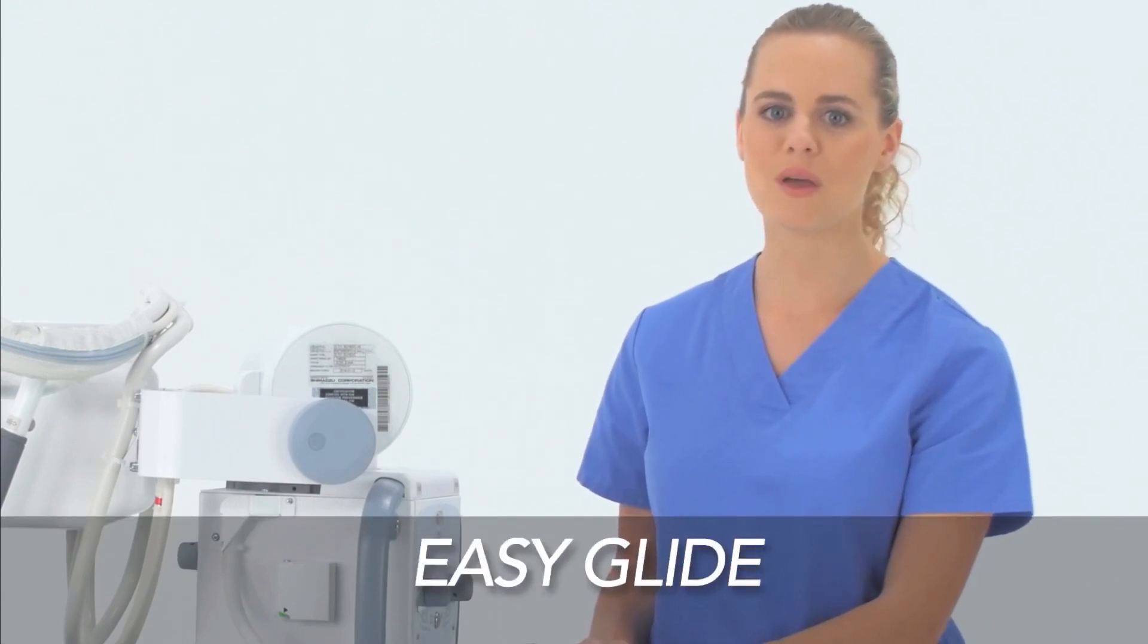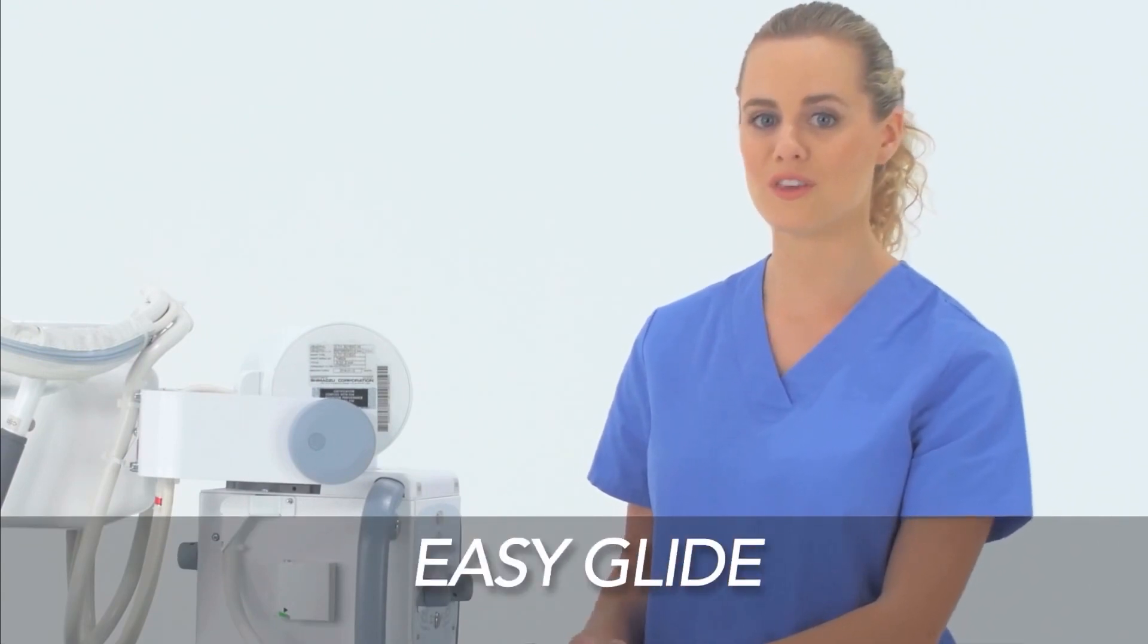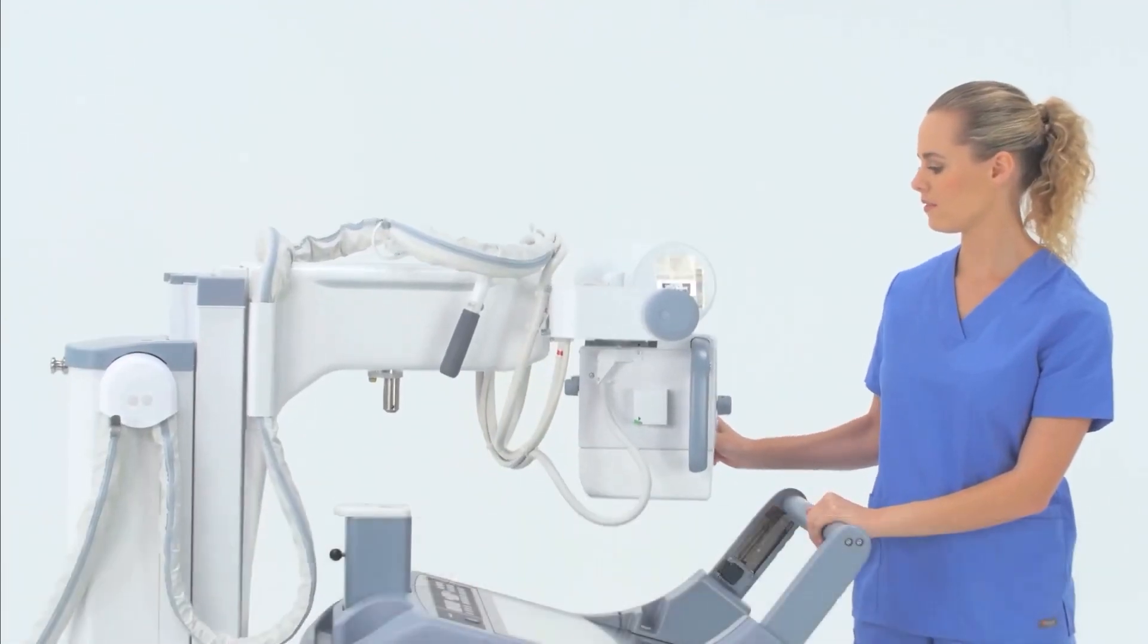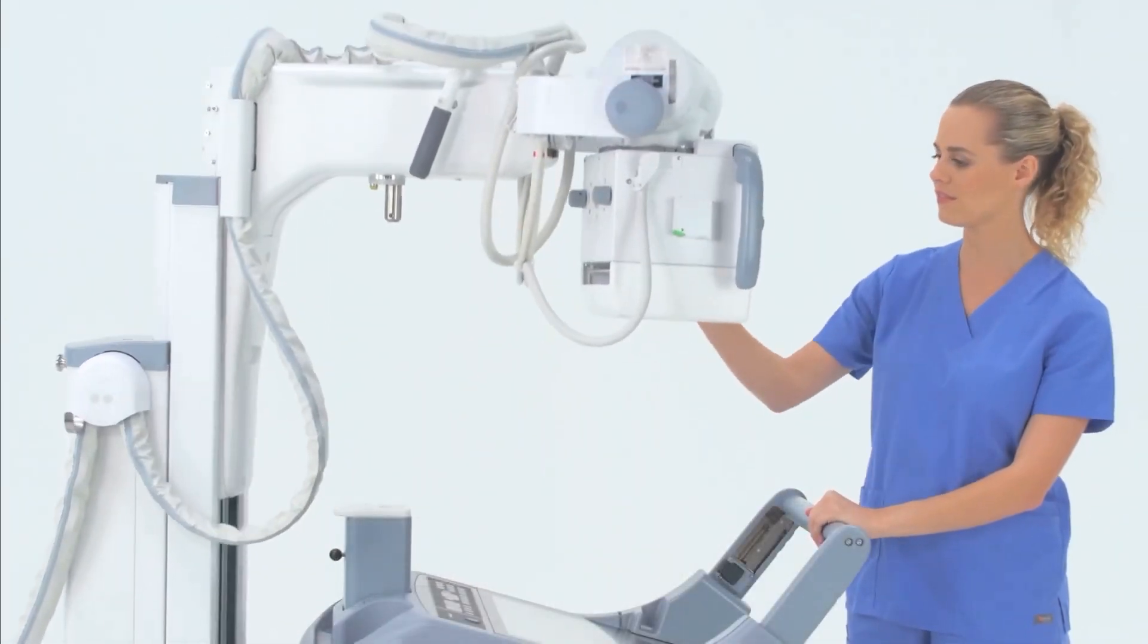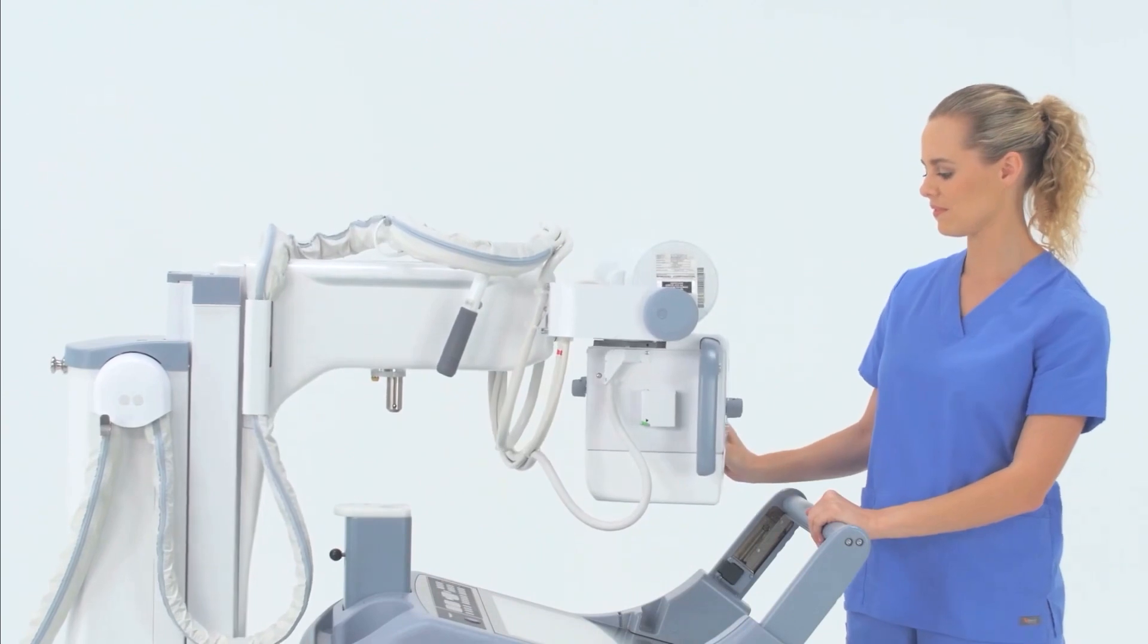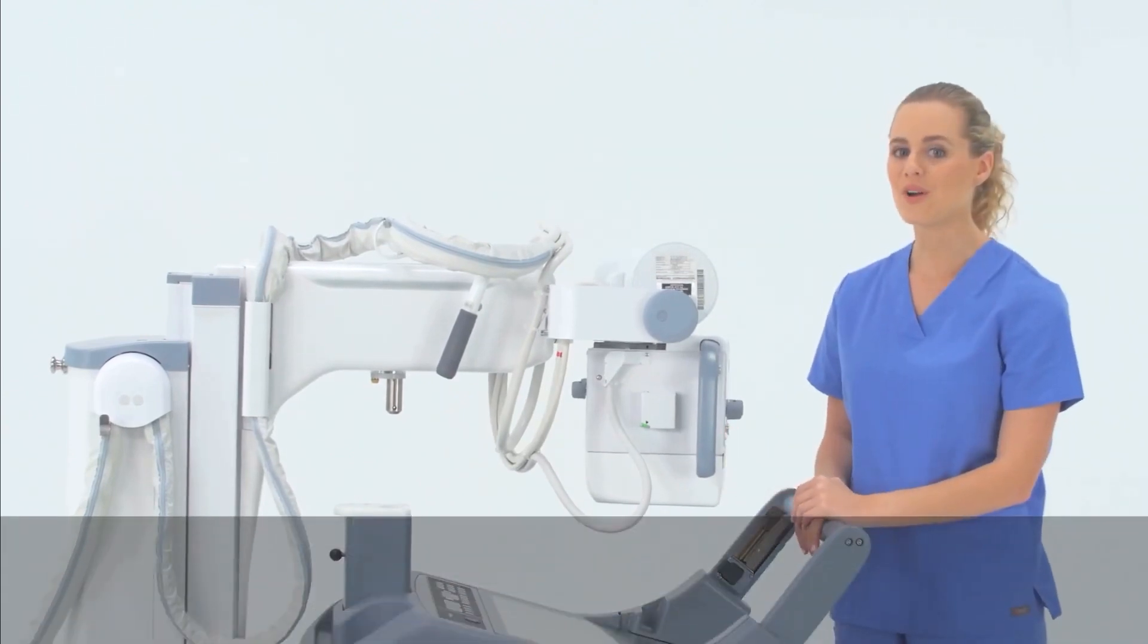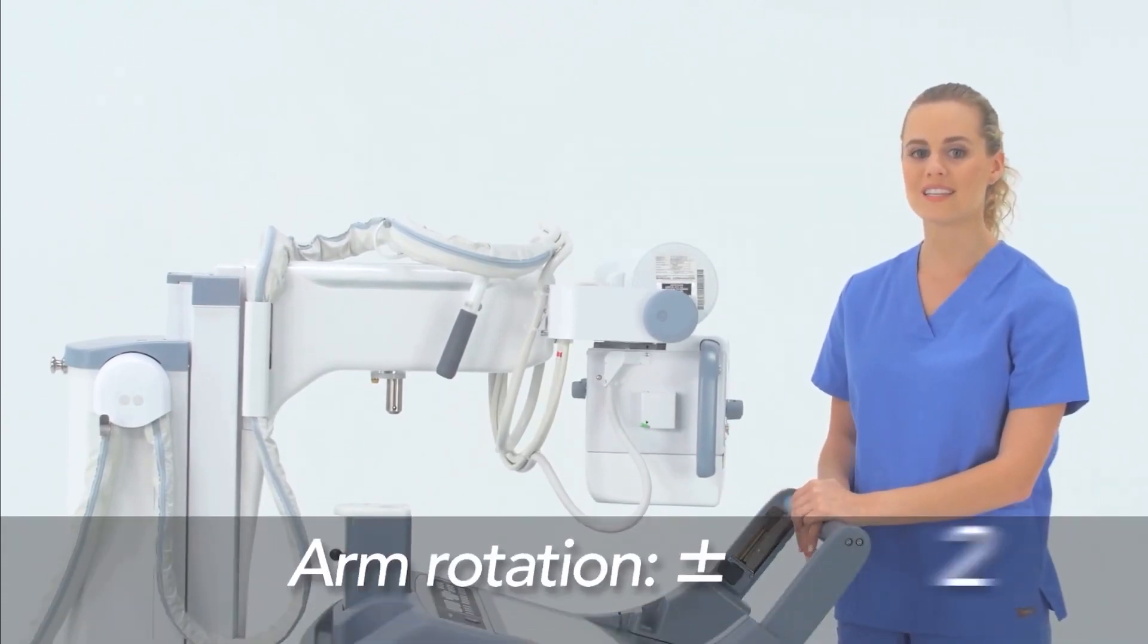When the collimator is freed, you will notice that it moves much more easily thanks to a new feature called Easy Glide, which reduces the amount of force necessary to move and position the arm. This allows arm rotation up to 270 degrees in either direction.